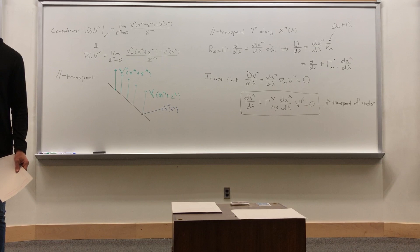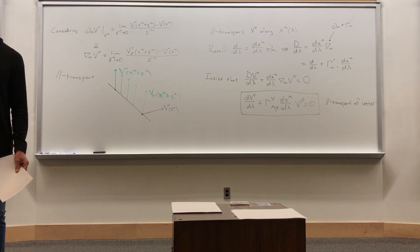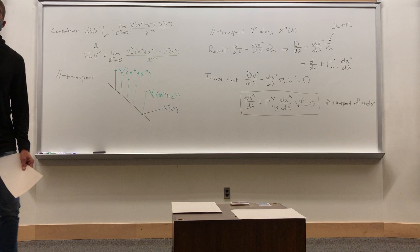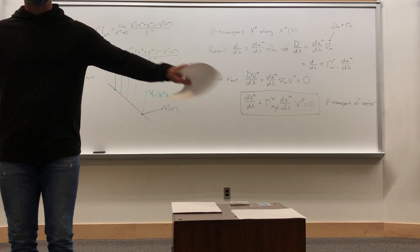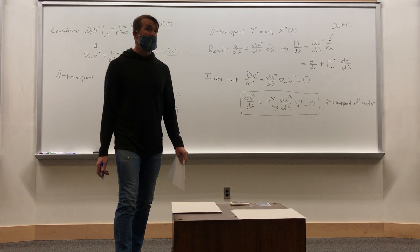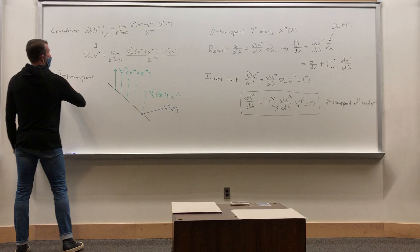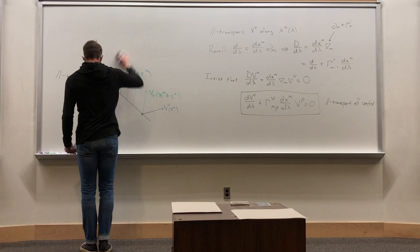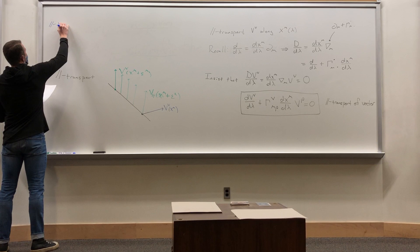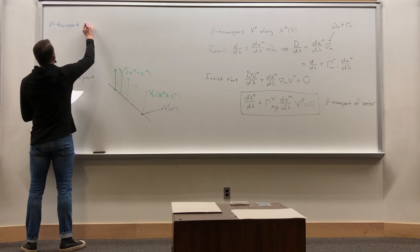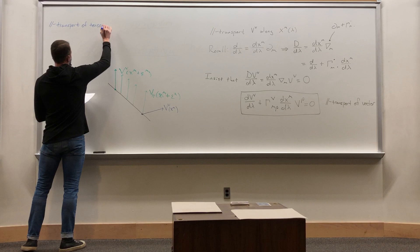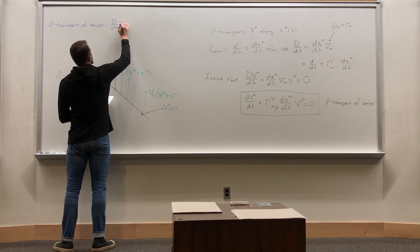We just learned how to parallel transport a vector — but how do we parallel transport a tensor? Is the vector the only thing that lives in tangent space? No — tensors live in products of tangent space and cotangent space because they can have dual vector components. So the rule for parallel transport of a tensor follows similarly. I'll do the simplest tensor T alpha beta, with one up and one down index — one vector and one dual vector index. Because once you've got that, you know how to do anything.